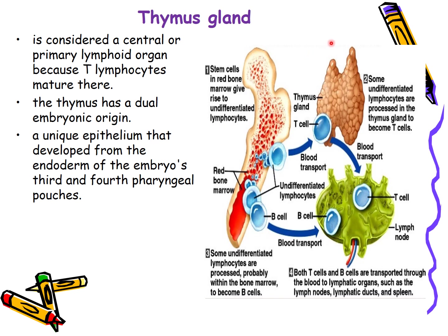The thymus gland is considered a primary or central lymphoid organ, as it is involved in the maturation of undifferentiated lymphocytes — the T lymphocytes. Undifferentiated lymphocytes formed in the bone marrow are transported by the blood into the thymus, where they differentiate into T lymphocytes and are then transported to various lymphoid organs. The thymus has a dual embryonic origin; its epithelium is derived from the endoderm of the embryo's third and fourth pharyngeal pouches.